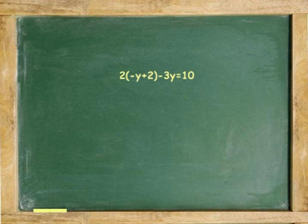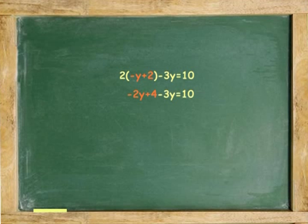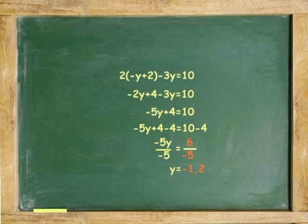Solving for y. 2 times negative y plus 2 minus 3y equals 10. Multiply contents of parentheses by 2. Combine like terms negative 2y and negative 3y. Subtract 4 from both sides. And divide both sides by negative 5. Y equals 6 over negative 5 or negative 1.2.